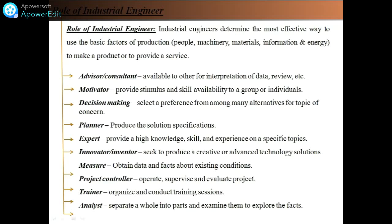What is the actual role of an industrial engineer? An industrial engineer has to determine the most effective way to use the basic factors of production. Any production requires machinery, people, material, information, and energy. The goal is to make effective use of these and provide a service to the customer with quality products and first delivery.